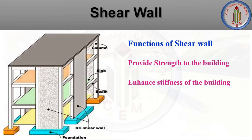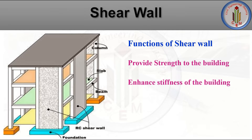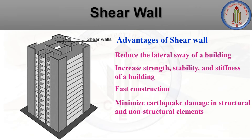The main functions of a shear wall are: it provides lateral shear strength to the building to resist earthquake and wind forces, and it enhances the stiffness of the building. According to the orientation and location of the shear wall, it provides more stiffness, which reduces lateral sway and hence reduces damage to the building.